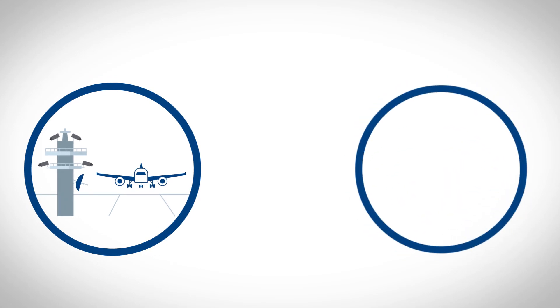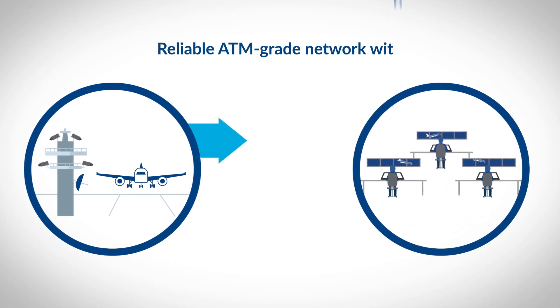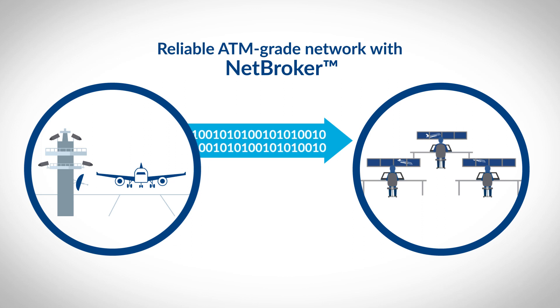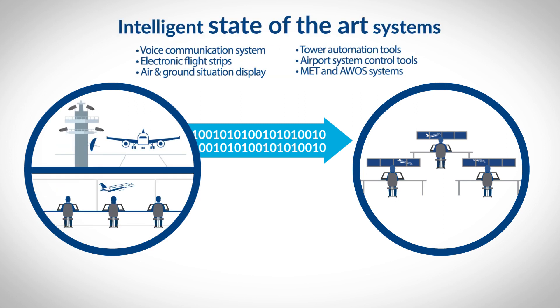Data flows to the contingency room in near real time. Netbroker ensures connection reliability and ATM-grade performance by prioritizing safety-critical data traffic over other traffic at times of decreased network throughput. All our products support the virtual center concept, and therefore allow seamless handover of control between control rooms.